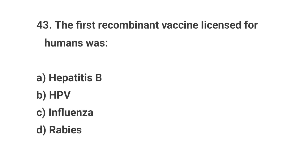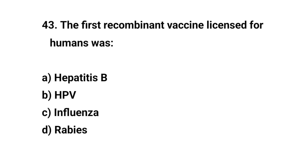Question number 43. The first recombinant vaccine licensed for humans was? The right answer is D: Hepatitis B.